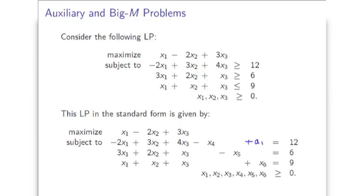We'll have plus a1 here and plus a2. Now, what we want to do next is ensure that a1 and a2 are both equal to 0. One way to do it is to ignore the original objective for a moment and instead have the objective of minimizing a1 plus a2. If we minimize a1 plus a2, then because both variables a1 and a2 are non-negative, the minimum possible value that we can get for the objective would be 0. And we want to actually get the objective down to 0, because otherwise the original problem would be infeasible.